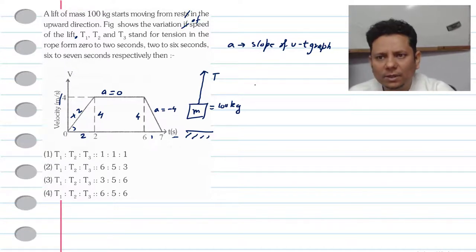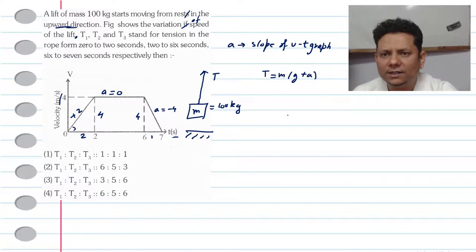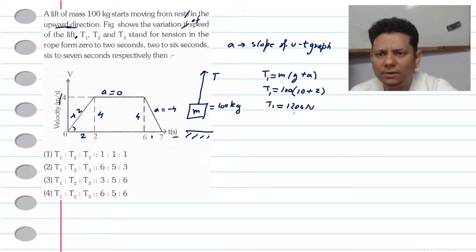Now, for the first case where you have plus acceleration, we can write T will be equal to m(g + a), because you need to take this block vertically upwards with acceleration a in the upward direction. So T value will be mass 100 multiplied by g, let's take 10, plus 2. This will be equal to tension T1, that will be equal to 1200 newtons.